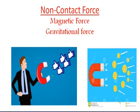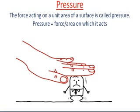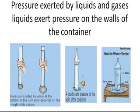Now we come to pressure. The force acting on a unit area of a surface is called pressure. Pressure equals force divided by the area on which it is acting. We can see an example: a column is filled with water and at one end we put a balloon. If we fill only half the tube, the balloon is not much in size. But if we fill it completely, the balloon becomes big. This proves that pressure exerted by water at the bottom of the container depends on the height of the column.